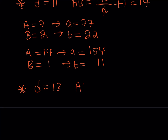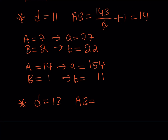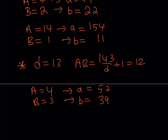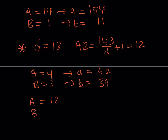Case 3: D equals 13. Using the formula, AB equals 143/13 plus 1 equals 11 plus 1 equals 12. Two relatively prime numbers with product 12: big-A equals 4, big-B equals 3. Multiplying by D gives small a equals 52 and small b equals 39. Another option is big-A equals 12, big-B equals 1, giving small a equals 156 and small b equals 13.